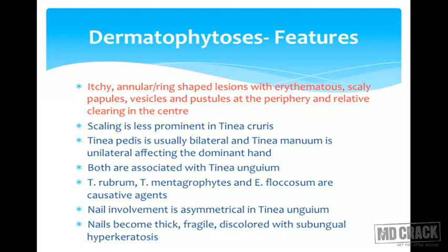Trichophyton rubrum, Trichophyton mentagrophytes, and Epidermophyton floccosum are the causative agents. Nail involvement in Tinea unguium is usually asymmetrical, involving only a few nails through auto-inoculation. This differentiates it from psoriasis and lichen planus of the nails, where symmetrical involvement of all nails is seen. In Tinea, nails become thick, fragile, and discolored with subungual hyperkeratosis.